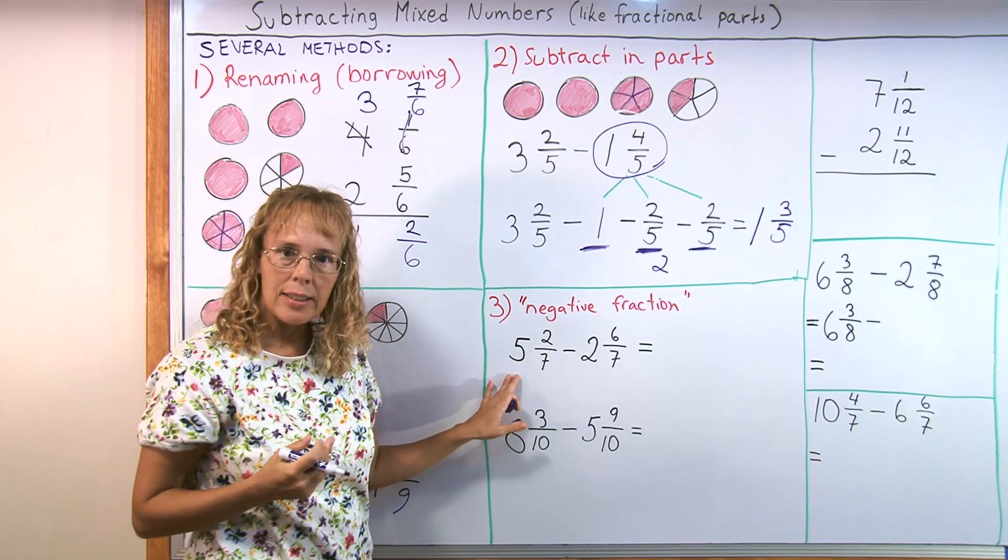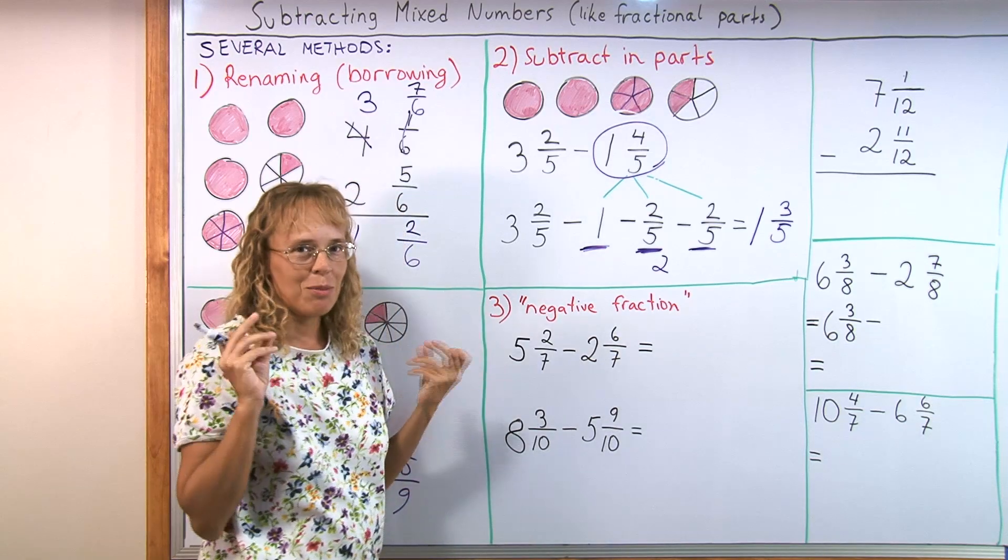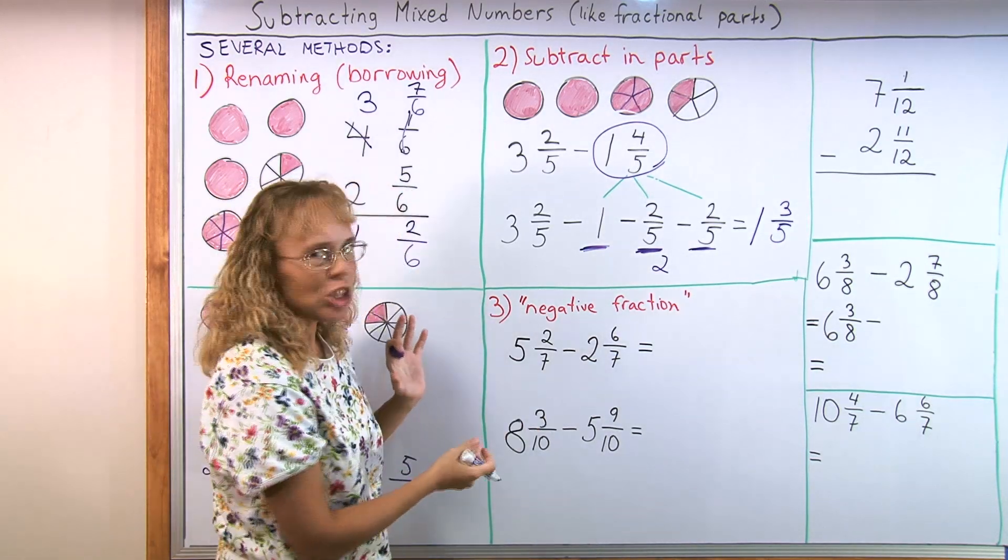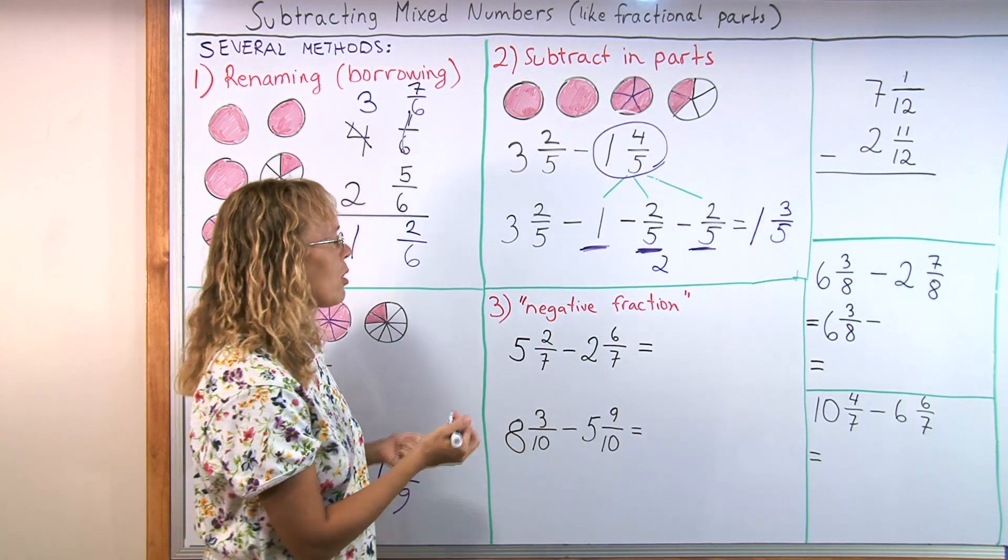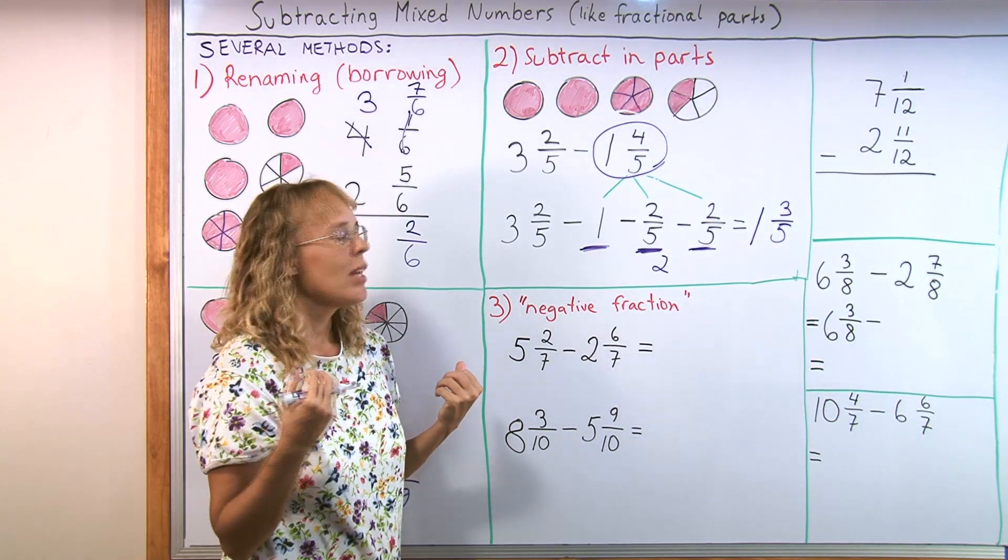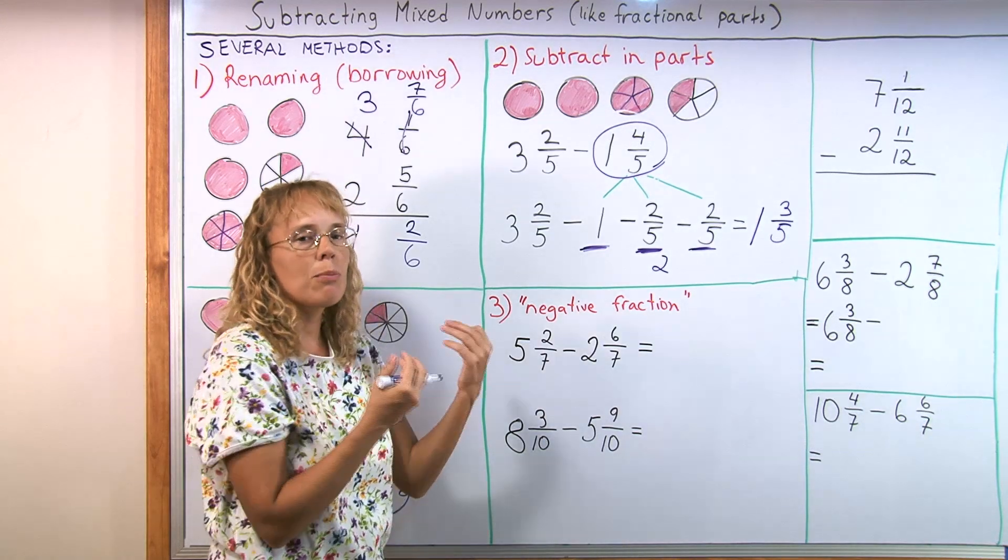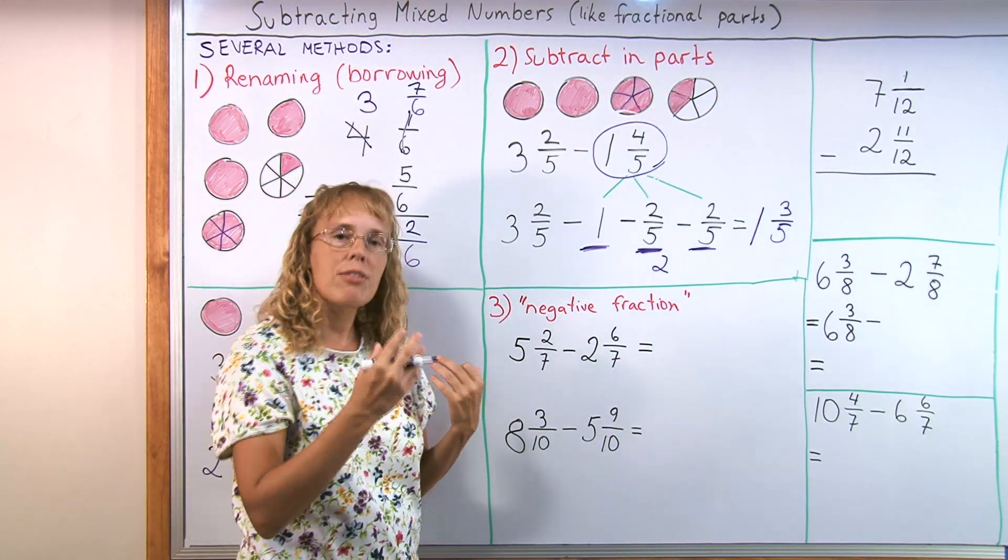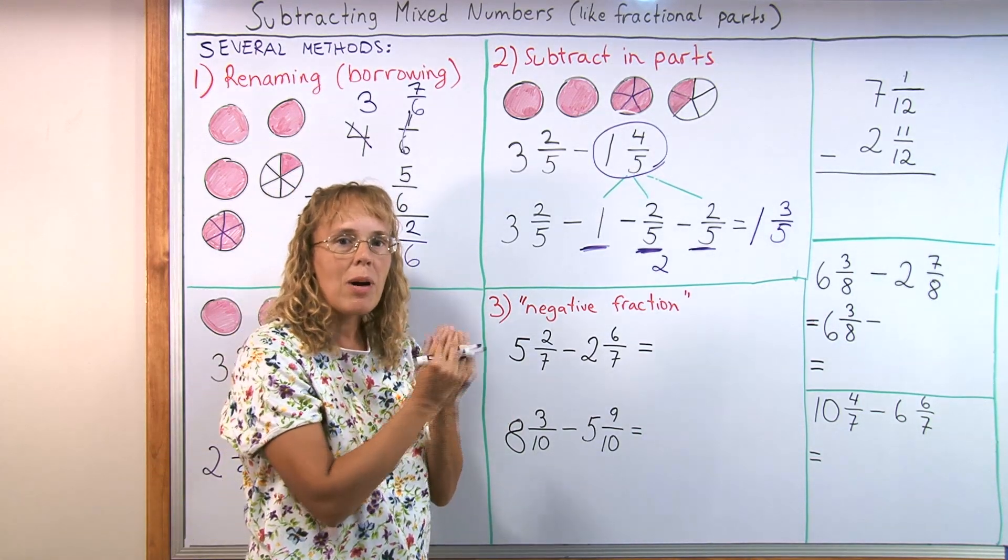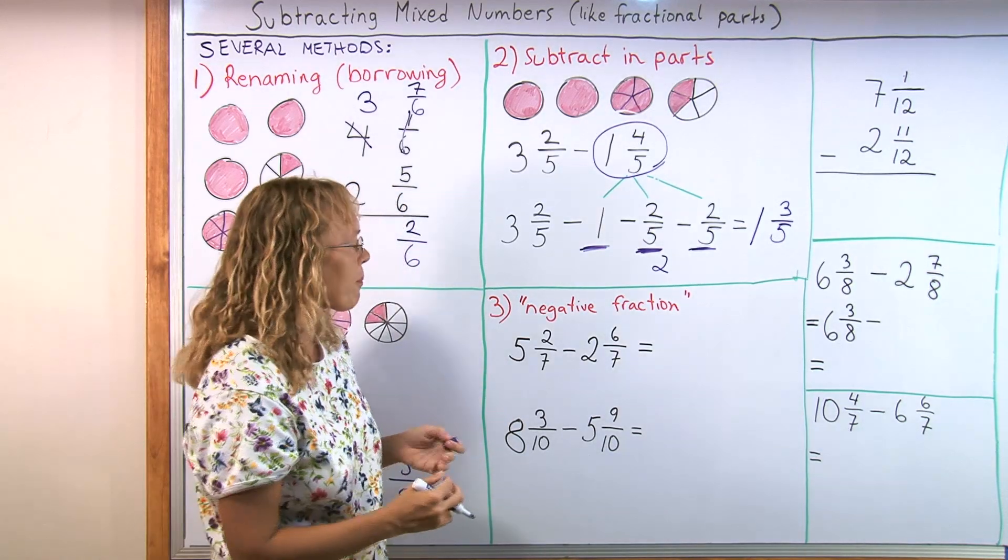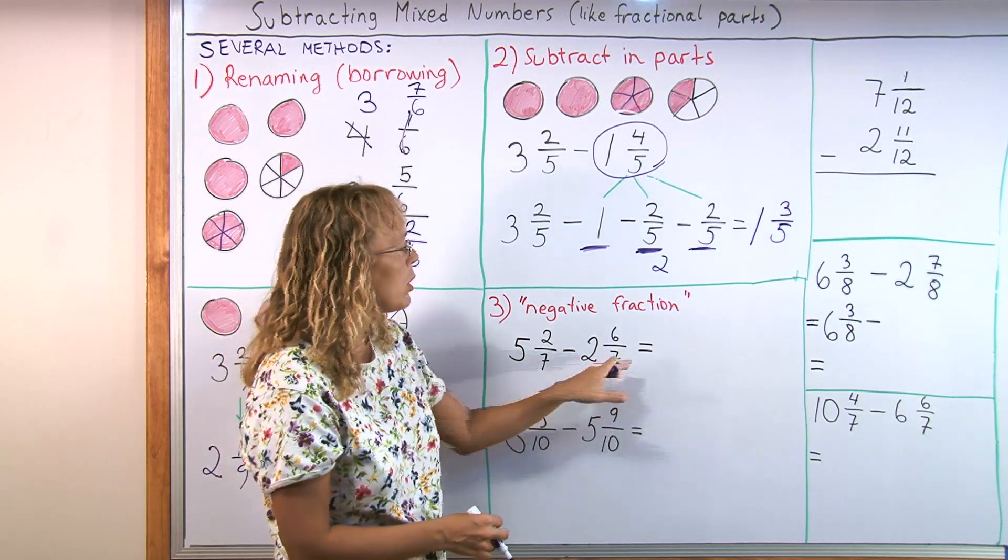And then this last method is similar to this one. I said earlier that all of these methods are pretty close to each other. And I don't have a good name for it. So I just put there the negative fraction method. Because we will use negative fractions. This method is best for students that already understand about integer subtraction. For example, they know how to subtract 3 minus 5. Or 2 minus 7. It's kind of like having a number, an amount and then you go into debt. You take away a certain number.